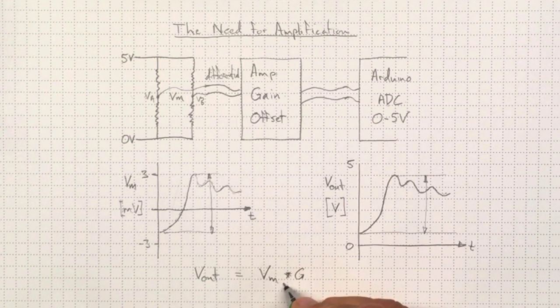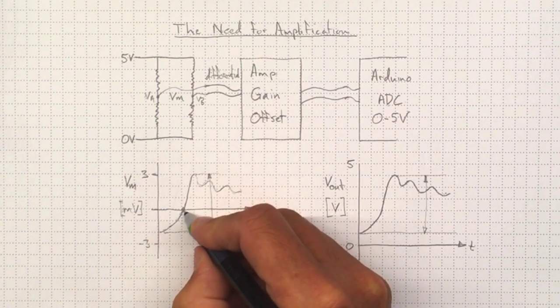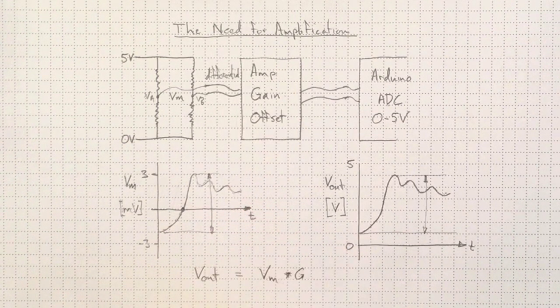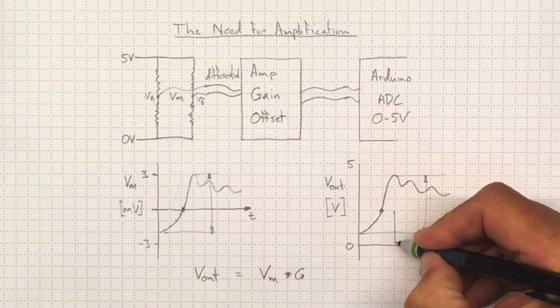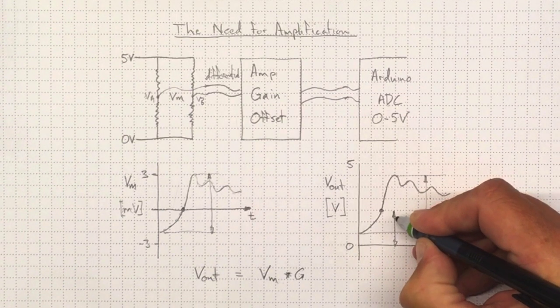And we also need an offset. That's going to take this value for the zero crossing there. That corresponds to this point here. And that's the idea of the offset.